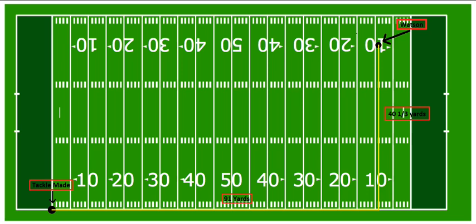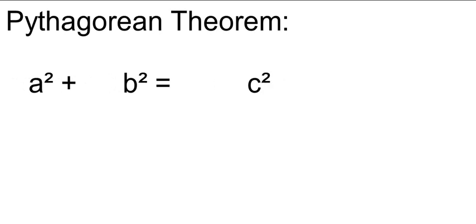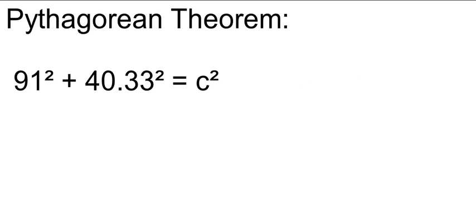Now it's time to do some calculations to figure out what the hypotenuse is of this right triangle, which gives us how far Watson actually ran on this play. The Pythagorean theorem says the base squared plus the height squared equals the hypotenuse squared — or, in more familiar terms, a² + b² = c². We know a is 91 yards and b is 40⅓ yards. Go ahead and pause the video, grab your calculator, and figure out what 91 squared and 40⅓ squared are.